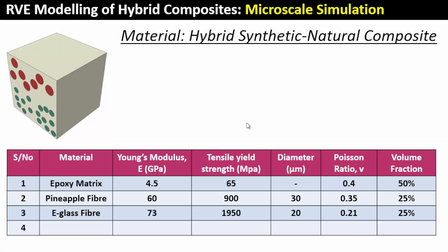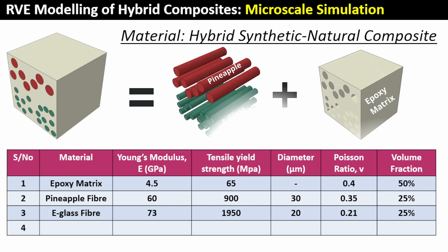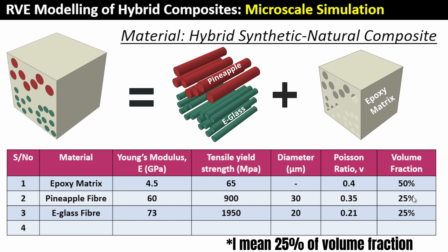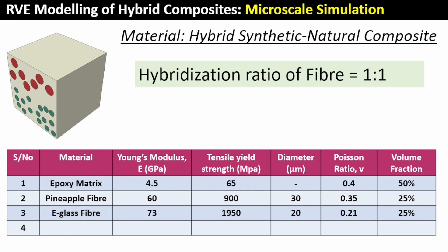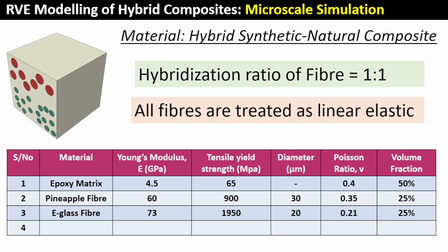The materials being studied are defined in a table. The epoxy matrix has a Young's modulus, tensile strength, and Poisson's ratio, and will occupy 50% of the RVE. The pineapple fiber has a diameter of 30 microns and represents 20% of the volume. The E-glass fiber has a diameter of 20 microns and represents 25% of the volume. The hybridization ratio is 1:1 since both fiber volume fractions are equal. All fibers are treated as linear elastic.